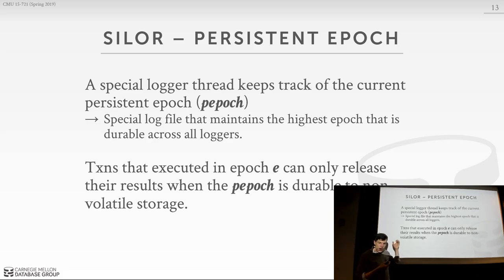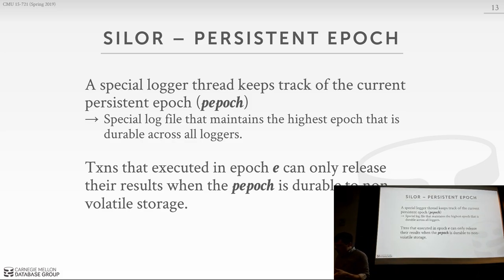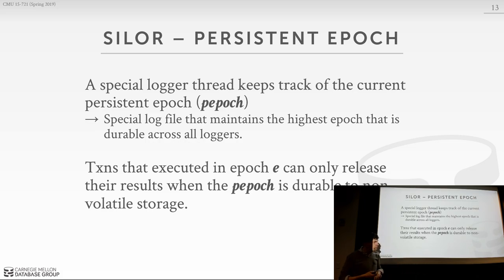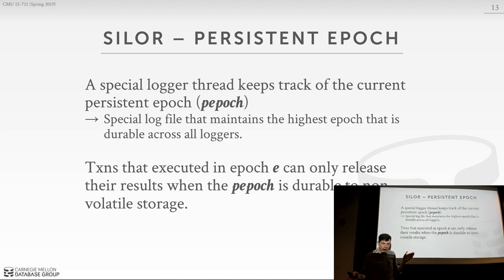Now let's look at scaling up on a single box with multiple sockets and multiple threads running simultaneously. The issue is that without coordinating between sockets, we need to track how far each log file has written in terms of epochs. So they introduce a special persistent epoch, or P-epoch — a log file that tracks the highest epoch that has been flushed to disk and is durable across all socket logger threads.